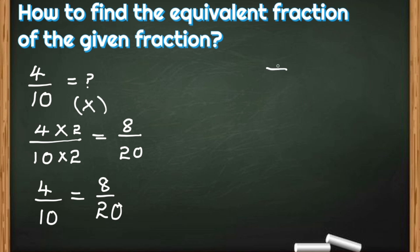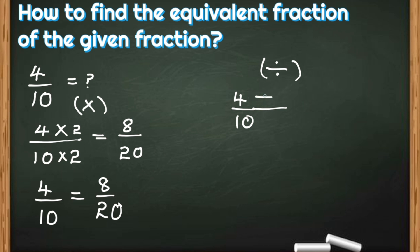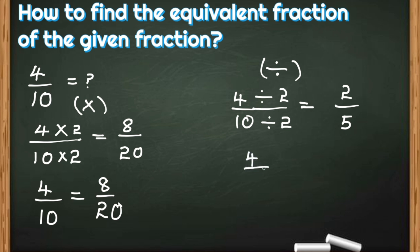Now let us find the equivalent fraction of 4 by 10 using the division method. We divide both the numerator and denominator by any same number. 4 and 10 can both be divided by 2. So 4 divided by 2 is 2, and 10 divided by 2 is 5. So we got 2 in the numerator and 5 in the denominator.